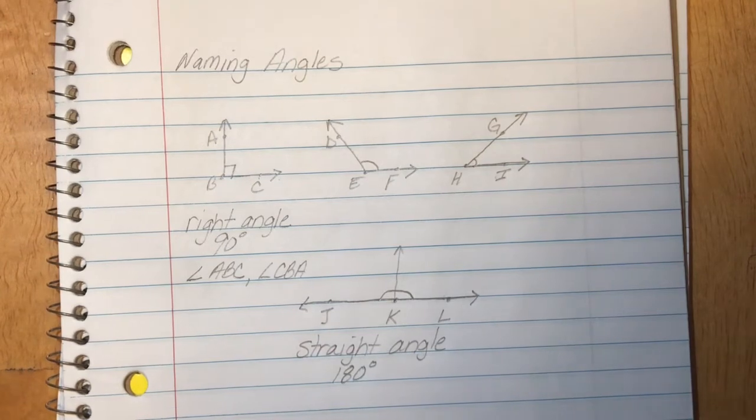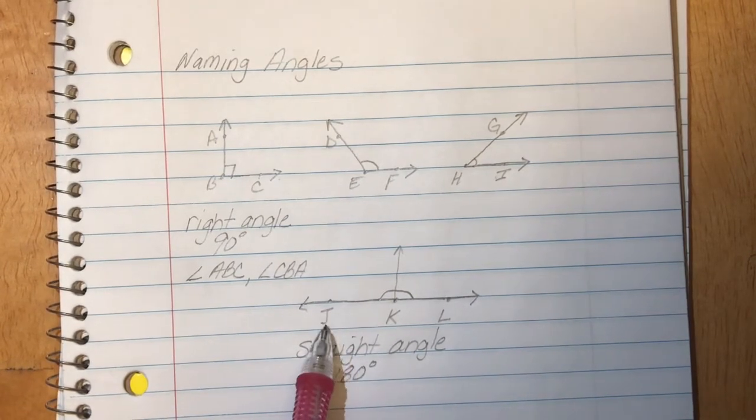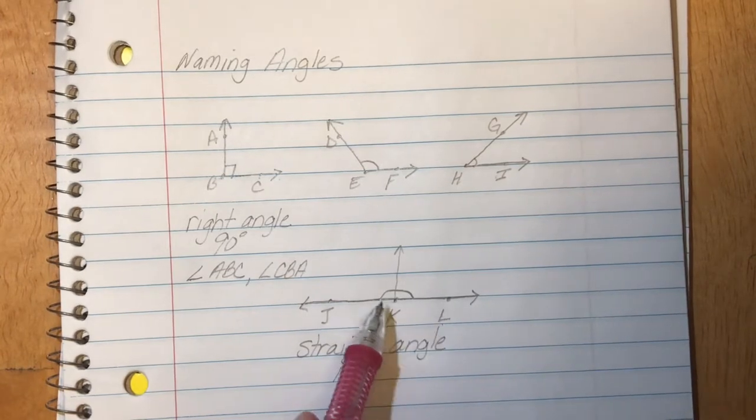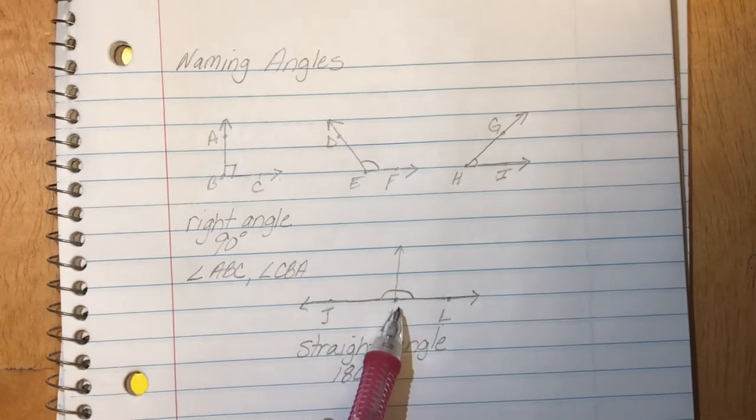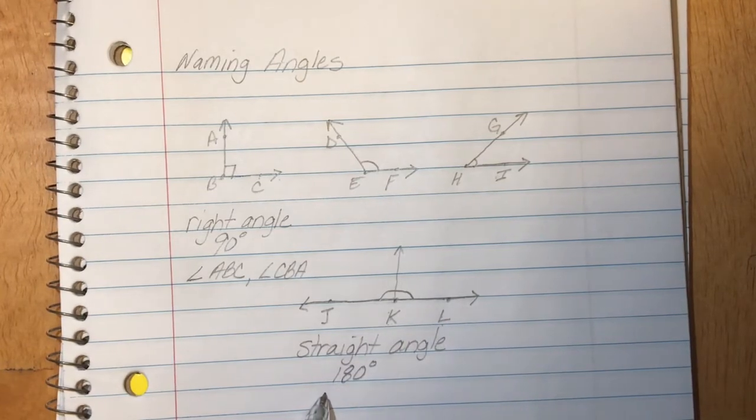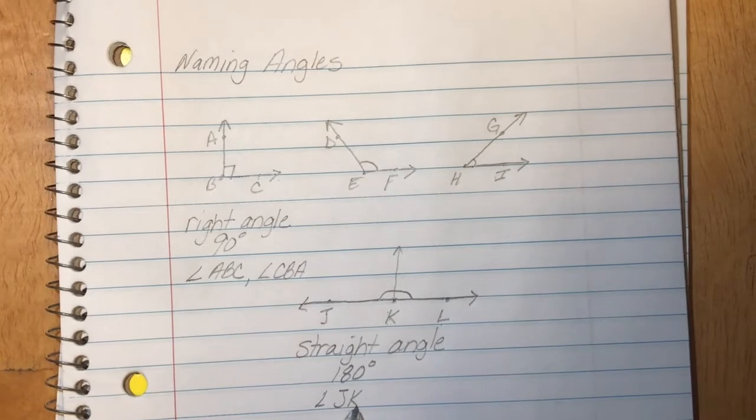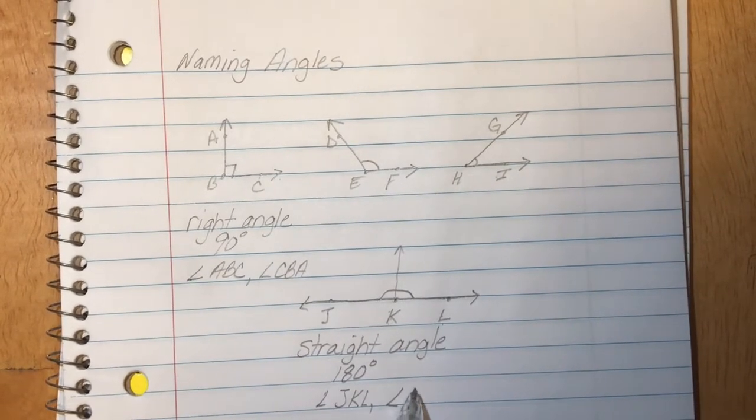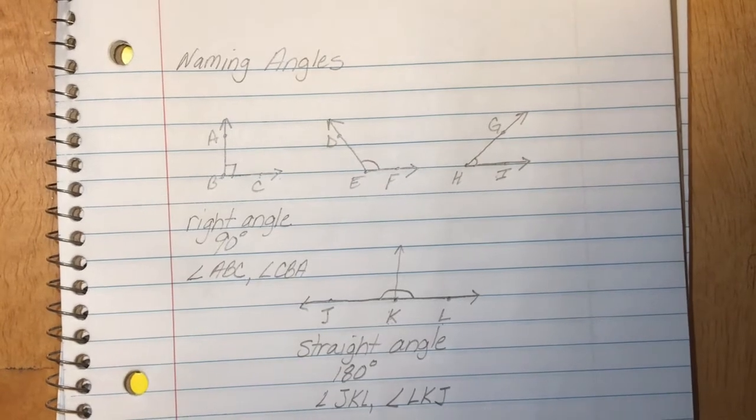And again if I were to name this angle I could call it JKL or I could call it LKJ. Making sure that the center point K is in the middle. So I could call this angle JKL or I could call it angle LKJ.